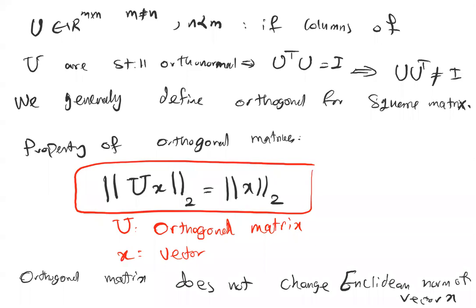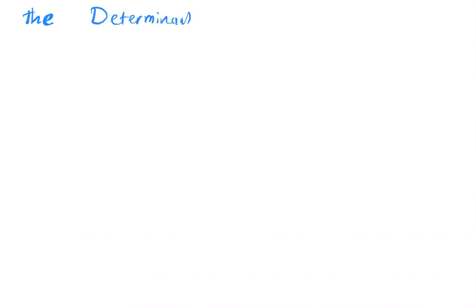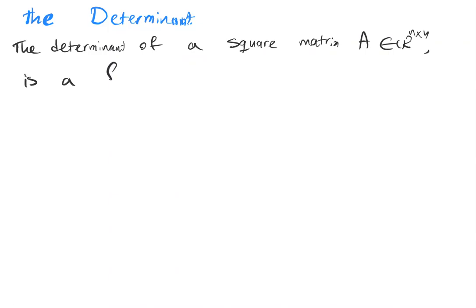The next important definition we want to talk about is the determinant. We start with the definition: the determinant of a square matrix A in n by n space is a function — we denote that function as 'det' — mapping from the n by n space to real scalar values, denoted by det(A) or |A|.